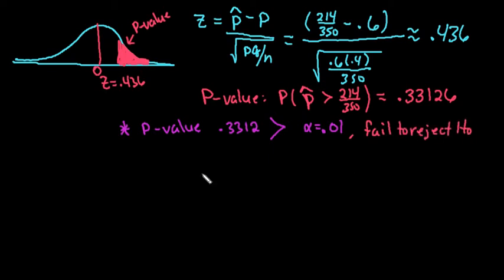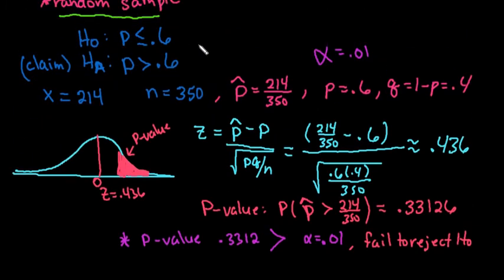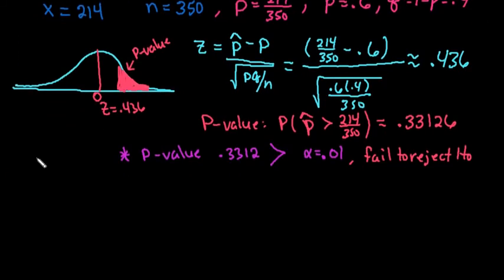So for this one, we do not have enough evidence to reject the null hypothesis. So essentially what we're saying is we don't have enough evidence to support the claim. So at alpha equals 0.01 or at 1% level of significance, we do not have enough evidence